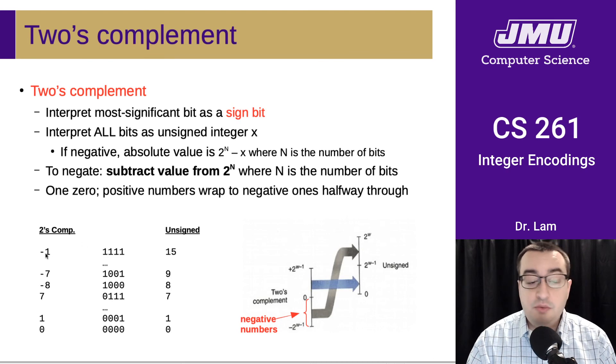So here we have negative 1, which is represented using 1111, or the unsigned value 15, because if you take 16 and you subtract 15, you get 1, which is the absolute value of negative 1.